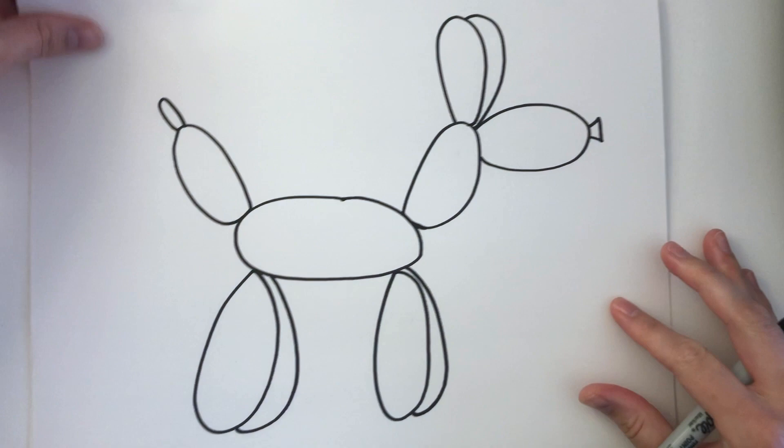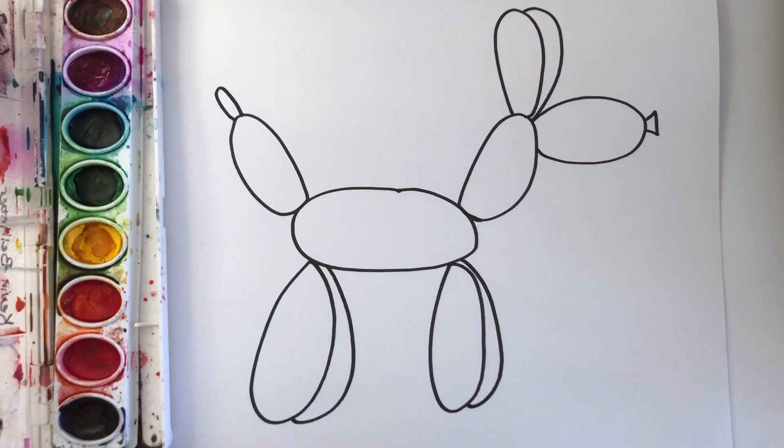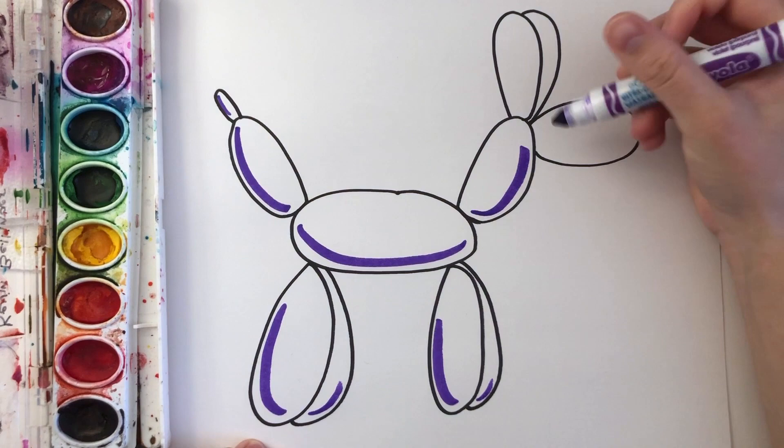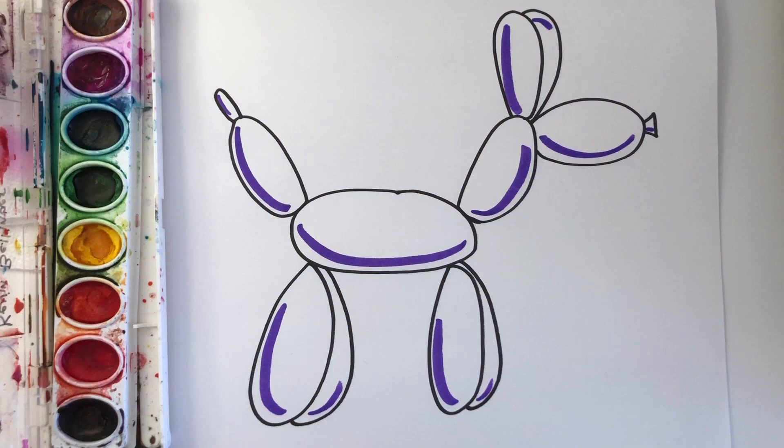Now it's time to add color. You can use any materials you want for this. I'm starting by using a marker to create a dark shadow. On one side of each balloon, I'm creating a curved line around where I want the shadow to be. Use a dark marker or a crayon and press really hard.